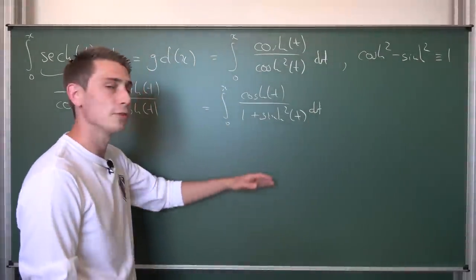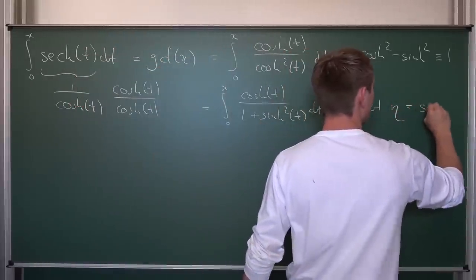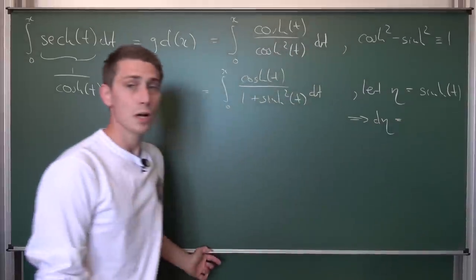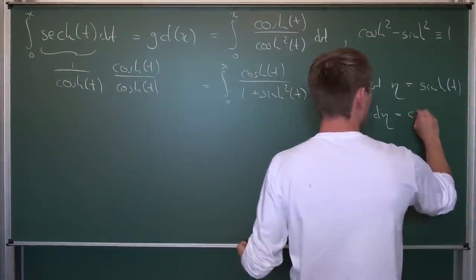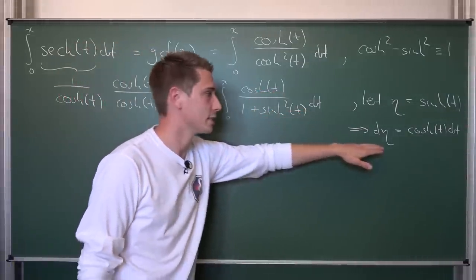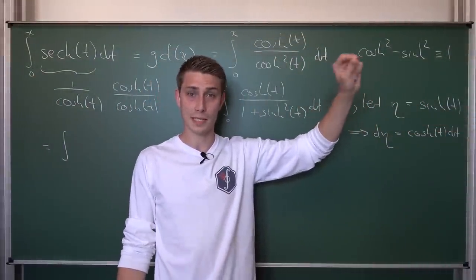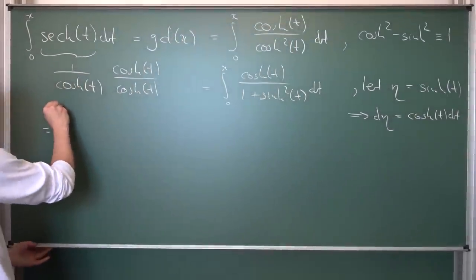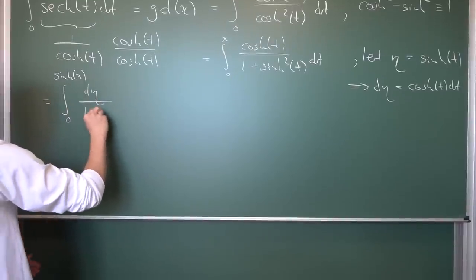A nice substitution falls from the sky: let eta equal sinh(t). Differentiating both sides implicitly with respect to t gives d(eta) = cosh(t) dt, since the derivative of sinh is cosh. We have cosh(t) in the numerator, so cosh(t) dt is just d(eta). For the bounds: plugging t = 0 gives sinh(0) = 0, and plugging in x gives sinh(x) as the upper bound. So we end up with the integral from 0 to sinh(x) of d(eta) over (1 + eta²).